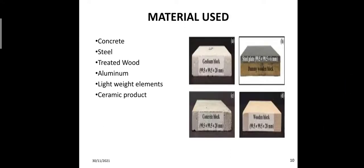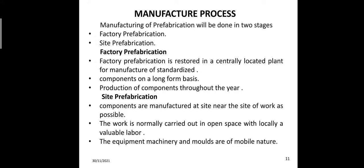Materials used include: concrete, steel, treated wood, aluminum, lightweight elements, and ceramic products. The manufacturing process of prefabrication is done in two steps: first, factory prefabrication, and second, site prefabrication. Factory prefabrication is carried out in a centrally located facility for manufacturing standardized components on a long-form production basis throughout the year.